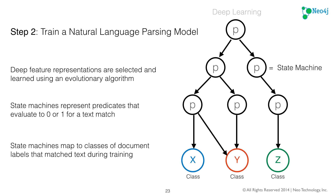Step two is to train a natural language parsing model on your training data set. Here we have a hierarchy of nodes which are state machines. A state machine is a predicate — it evaluates on some input as either true or false. In this hierarchy, we have a set of feature representations selected and learned using an evolutionary algorithm, which is kind of like a genetic algorithm. These state machines represent predicates that evaluate to zero or one when text is matched. When text is matched it activates, evaluates to one, and sends that input along to the next layer. If the text didn't match and a zero results, the input is not sent along to the next layer.